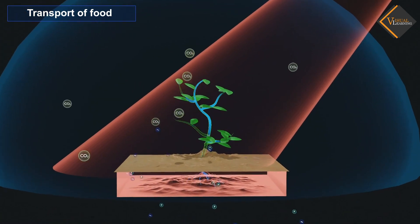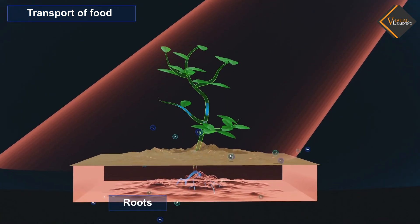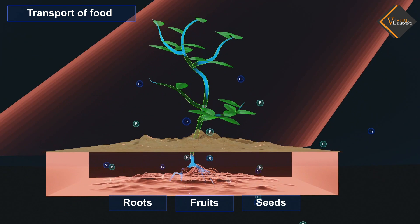These substances are especially delivered to the storage organs, fruits and seeds, and to growing organs.